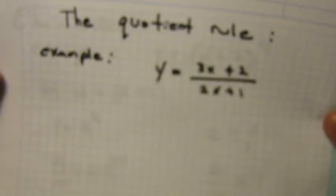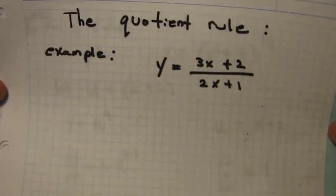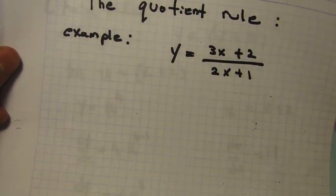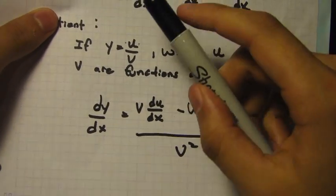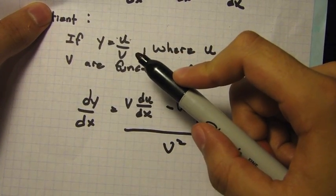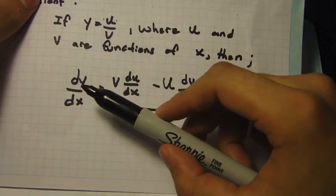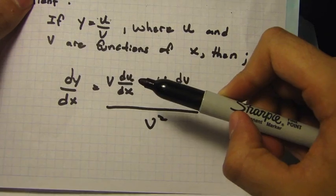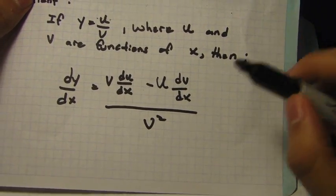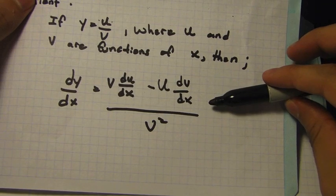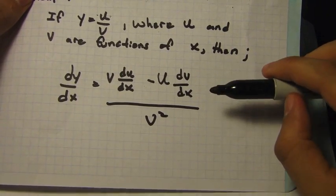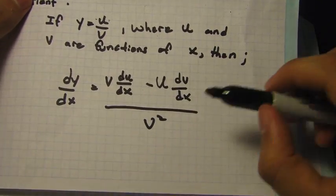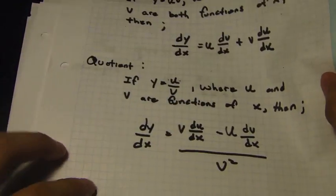The final rule we're going to go through is the quotient rule, and I've picked a very easy example here. The quotient rule says that if y equals u over v, where u and v are functions of x, then dy/dx equals v times du/dx minus u times dv/dx, all divided by v squared. People always find this formula confusing, but as long as you follow the steps correctly it's very simple.